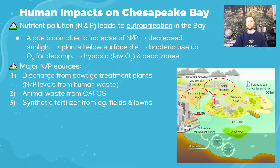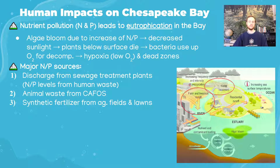Agriculture is another major source of nutrient pollution. Runoff from CAFOs — including manure lagoons containing animal waste — carries high levels of nitrogen and phosphorus. Synthetic nitrate fertilizers also run off agricultural fields. Between wastewater treatment and agriculture, these are the two main drivers of excess nutrients entering bodies of water.